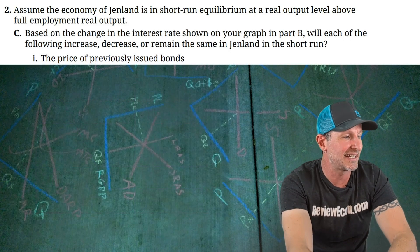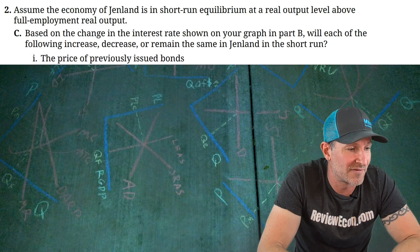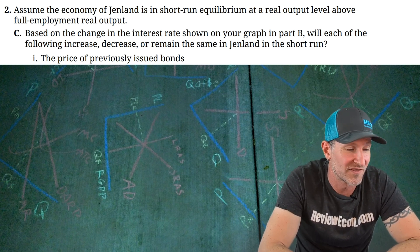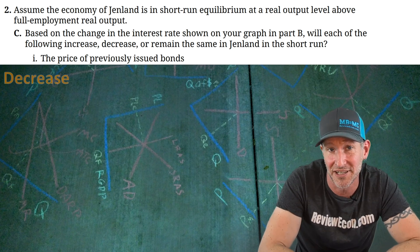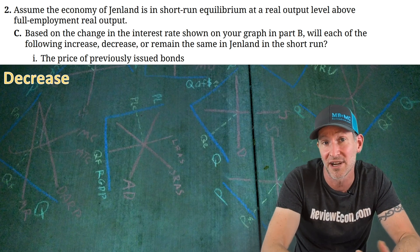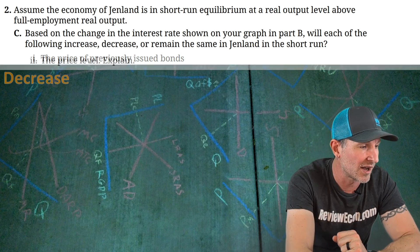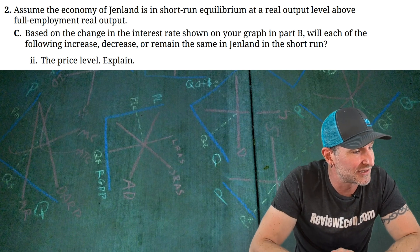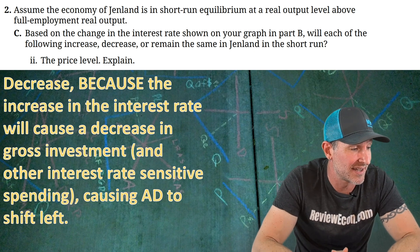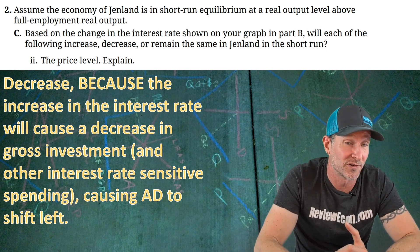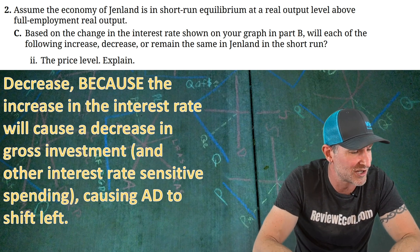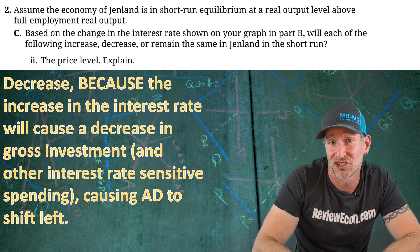Moving on to Part C. Based on the change in interest rates from Part B, will each of the following increase, decrease, or remain the same in GenLand in the short-run? First, the price of previously issued bonds: decreased, because bond prices and interest rates are inversely related — since the interest rate increased, bond prices must fall. For Part C-II, the price level: decreased, because the increase in the interest rate causes a decrease in gross investment and other interest-rate-sensitive spending, which shifts the aggregate demand curve to the left.